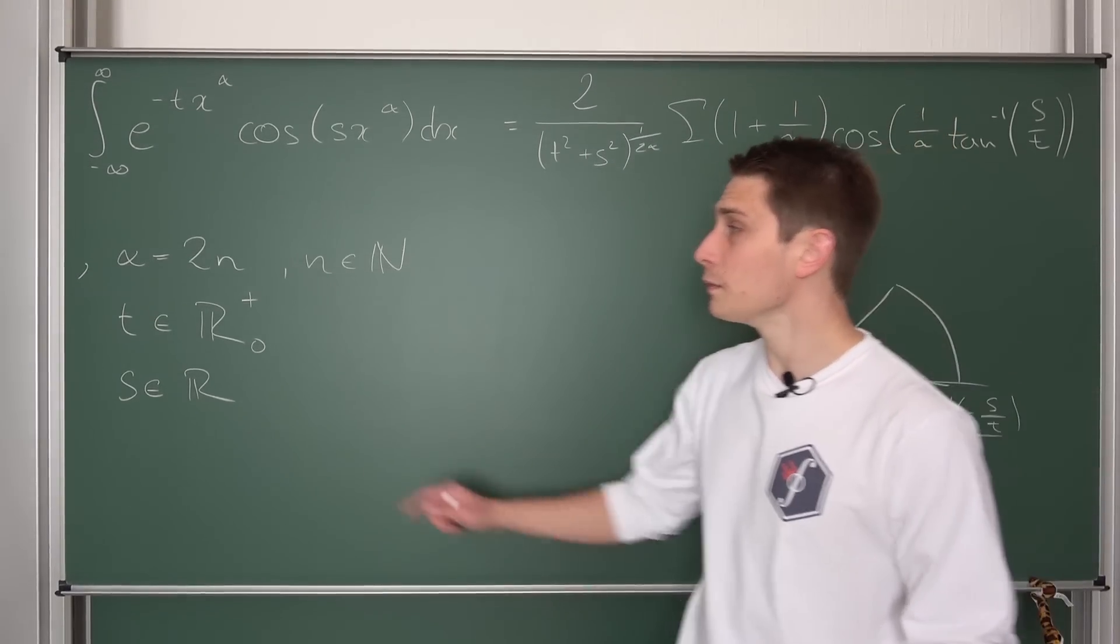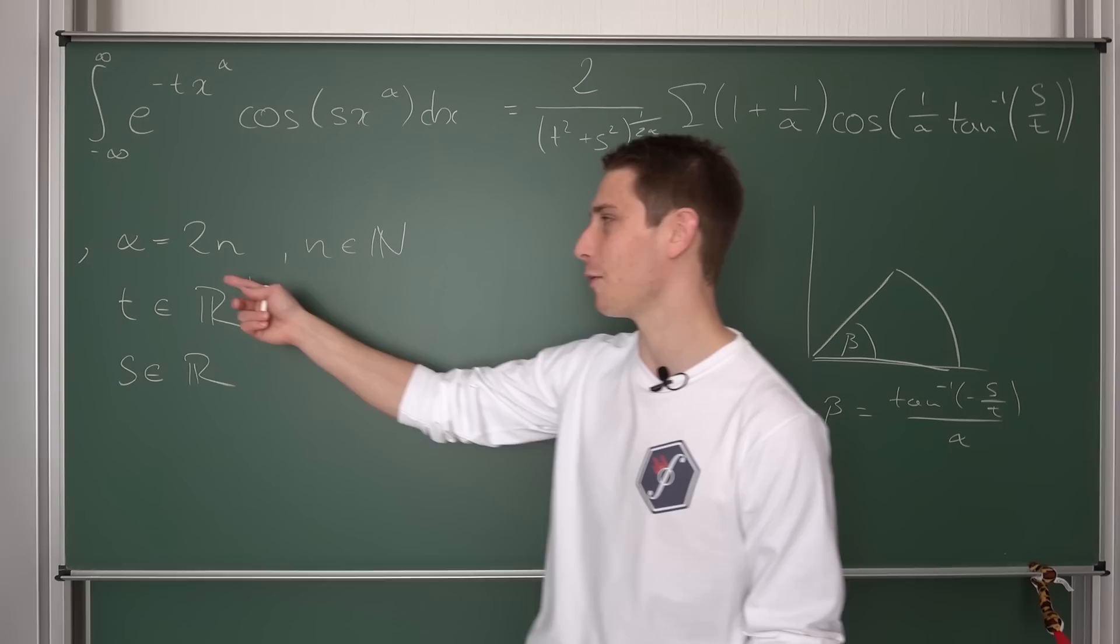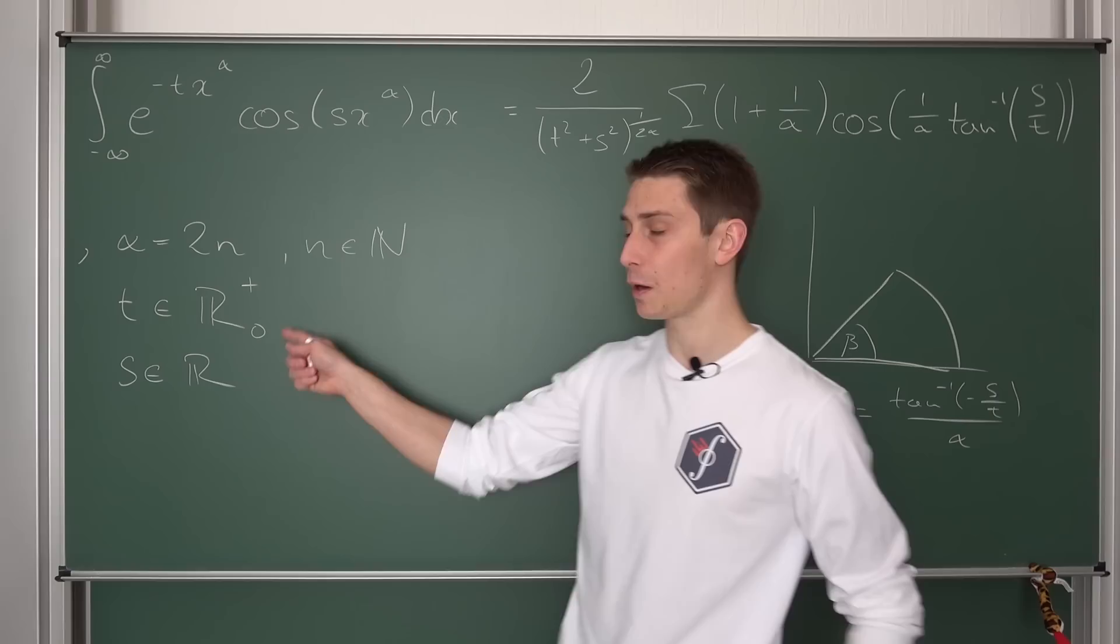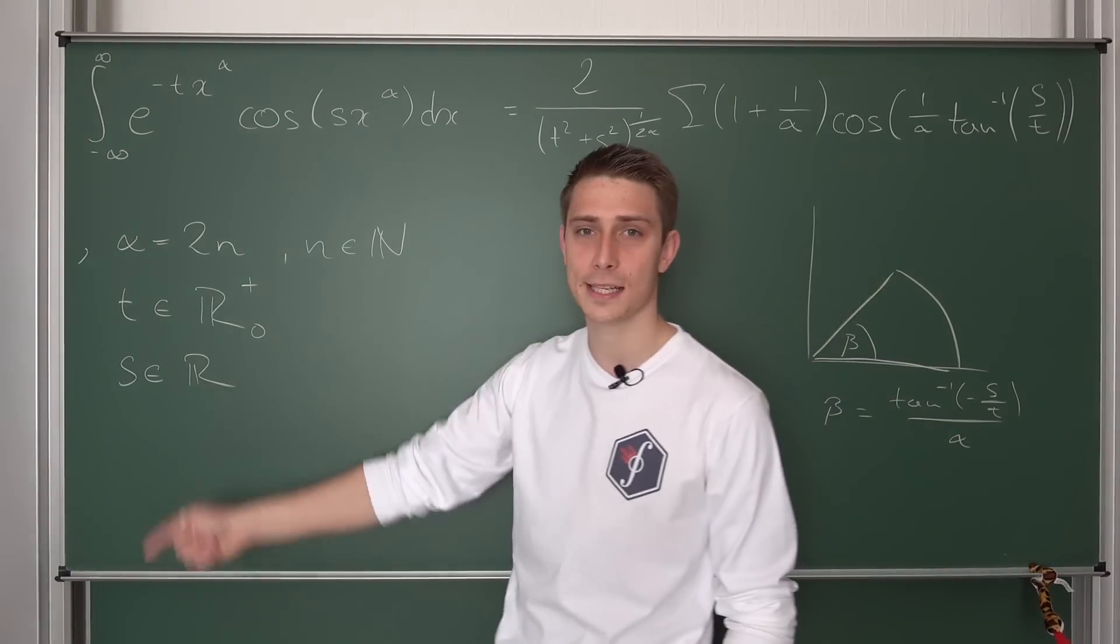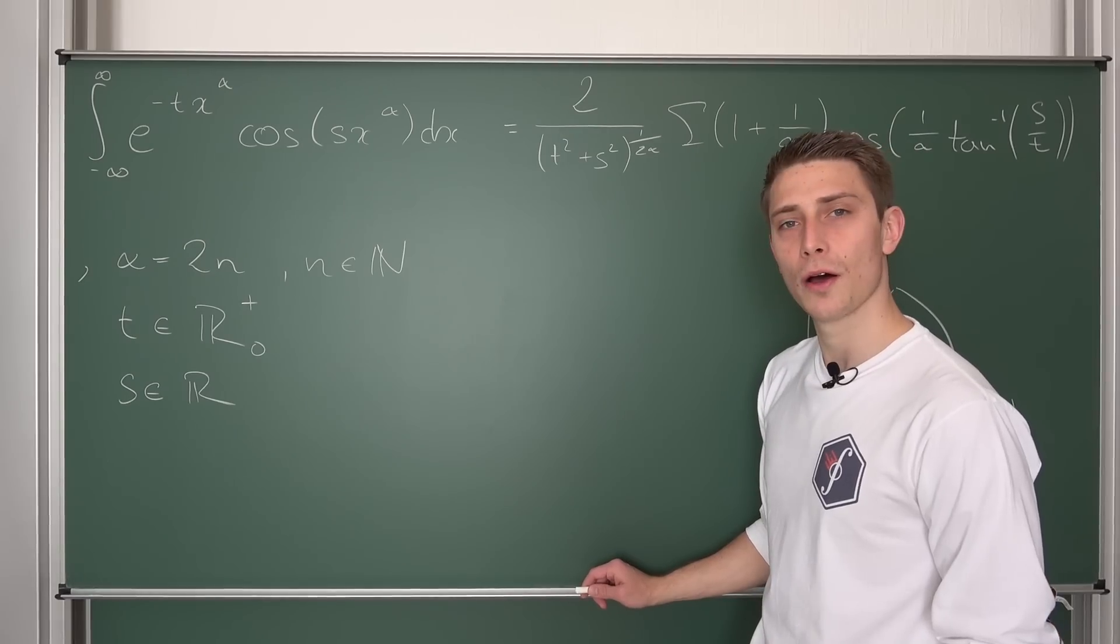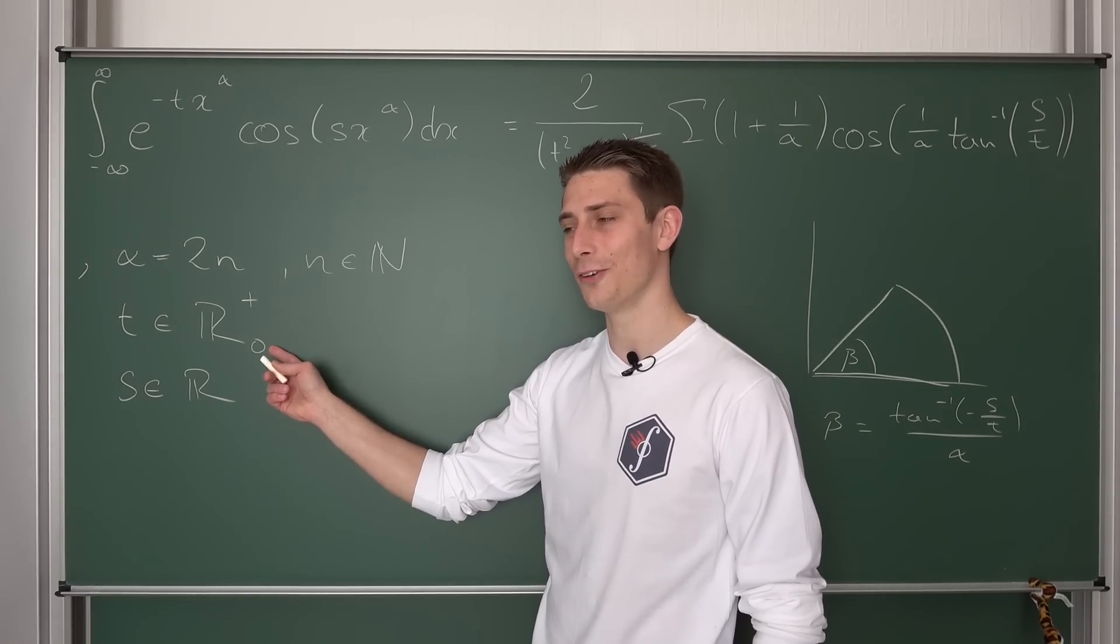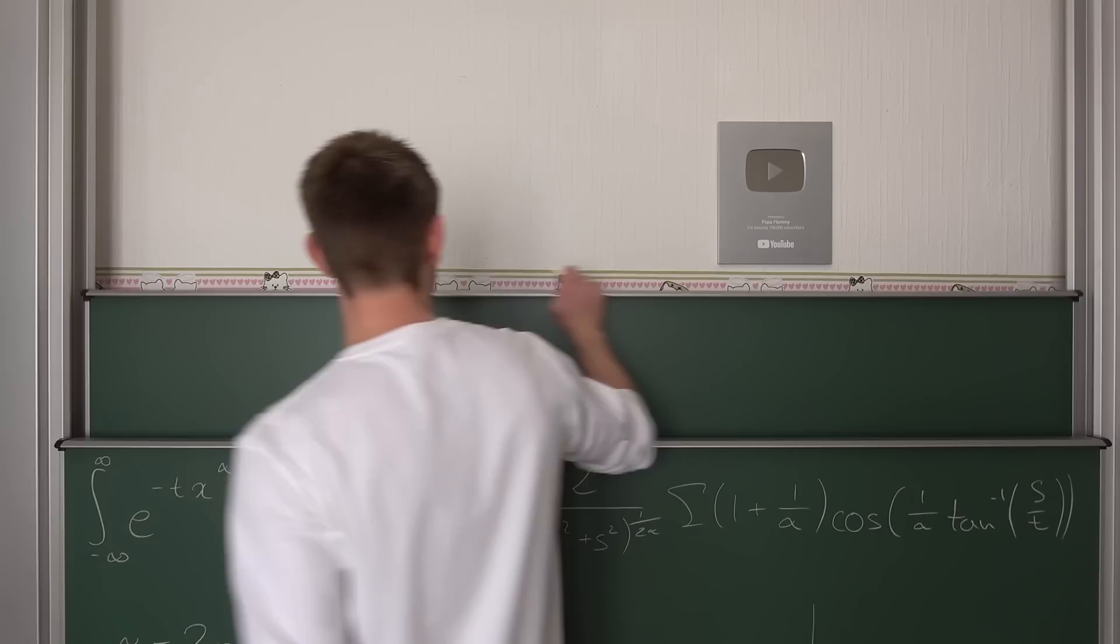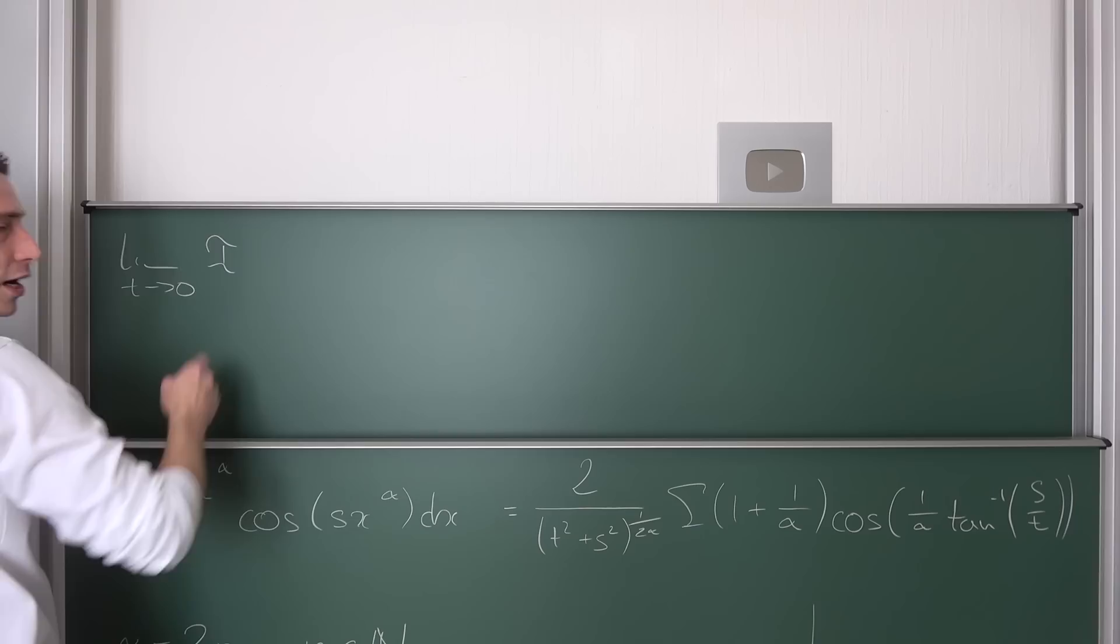Now let us recap. We had some alpha which is of even positive order for now. Also, we have t being element of R⁺, so the positive reals—with zero, it can approach zero. This is a really interesting case. And s can be something element of the real numbers. Now we are going to go ahead and let t go to zero, and this is where everything becomes really interesting. For the limit as t approaches zero of I—I is our integral of s and t and also alpha, it's triple parameterized.